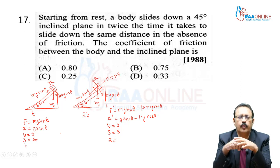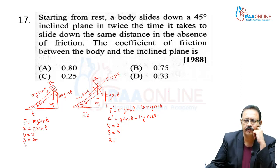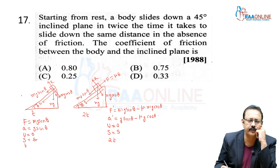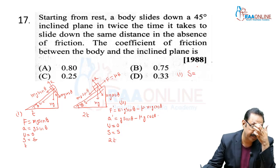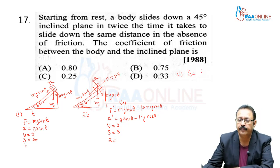Now we use Galileo's equation. First case: s = ½ · g sinθ · t² — call this equation 1. Second case: s = ½ · (g sinθ − μg cosθ) · (2t)².